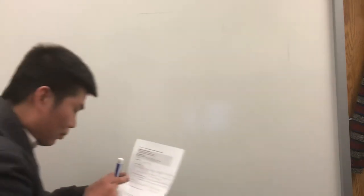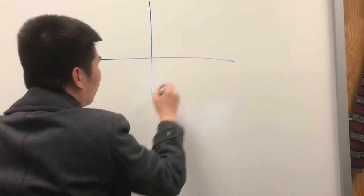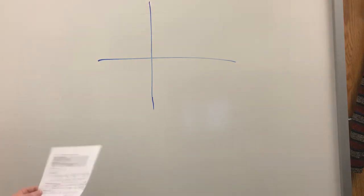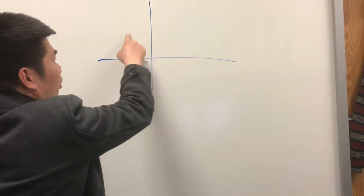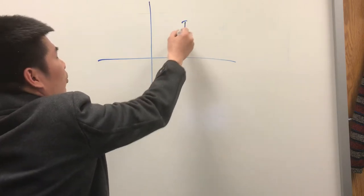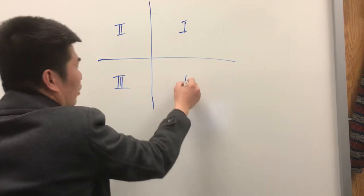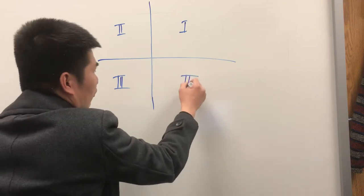In number 5, they want you to plot three points on the given coordinate plane. Just a general note about the coordinate plane: how many quadrants? Four quadrants. This is called quadrant 1, quadrant 2, quadrant 3, and quadrant 4 — going counterclockwise.